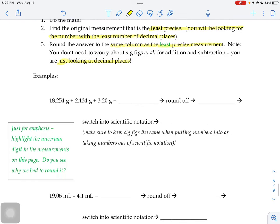Let's say you had three objects that you had the masses of, and we asked you for the total mass. If you add up that 18.254, 2.134, and 3.20, throw that in your calculator. Your calculator is going to spit out 23.588 grams. I'll put here like, here's your calculator answer. But what your calculator doesn't know is that this isn't a theoretical situation that you might learn about in math class where everything's perfect and there's no real life context. It says just for emphasis, highlight the uncertain digit in the measurements on this page. Do you see why we had to round it?